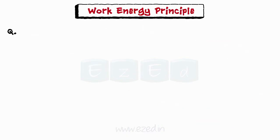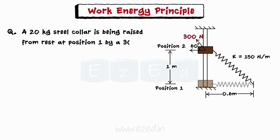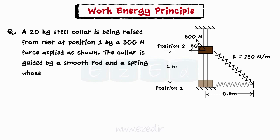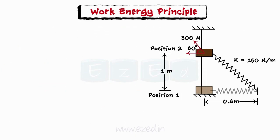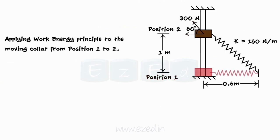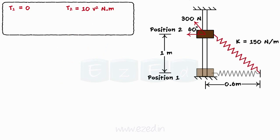Let us consider a problem on the work-energy principle. A 20 kg steel collar is being raised from rest at position 1 by a 300 N force applied as shown. The collar is guided by a smooth rod and a spring whose free length is 0.3 m. Find the speed of the collar as it reaches position 2. The collar is moving up due to the force. Applying the work-energy principle from position 1 to position 2: at position 1, the collar is at rest, so its kinetic energy is 0. At position 2, its kinetic energy is given by half MV squared. Here, work is done by a force, by a spring, and by a weight force.